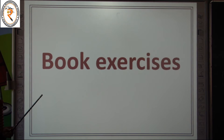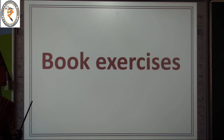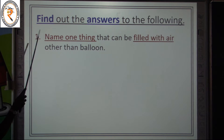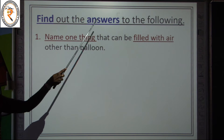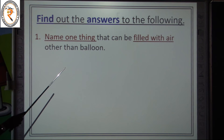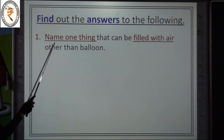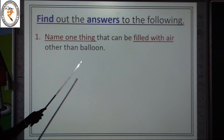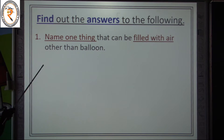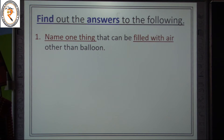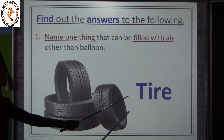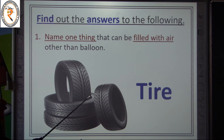Shall we move on to the book exercise? I have prepared some activities based on your book exercise to help you understand the concepts better. Activity one: find the answers to the following questions. Question one — name one thing that can be filled with air, other than a balloon. The answer is tyres. Tyres can be filled with air.